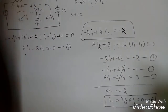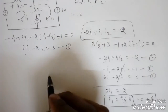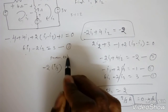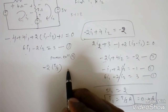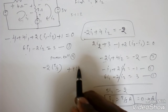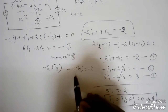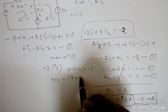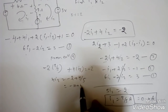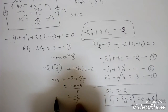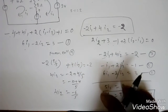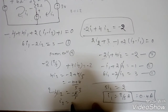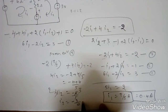Substituting i1 = 2/5 into equation 2: 4i2 = −2 + 4/5 = (−10 + 4)/5 = −6/5. Therefore i2 = −6/20 = −3/10 ampere.